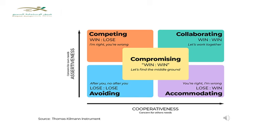In the compromising mode, it's a win-win but at 50-50 — we find a middle ground or middle solution but do not completely resolve the conflict. In accommodating, you are saying the other person wins while you concede, meaning you are highly focused on the other's concern and being more cooperative while neglecting your own needs.